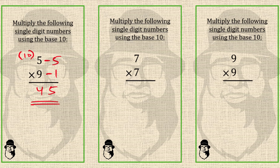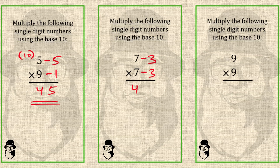Here 7 is 3 far from 10, so we write minus 3. Again minus 3. Now cross subtract: 7 minus 3 is 4. And for the right part, we multiply these two deficiencies: 3 times 3 is 9. So 7 times 7 is 49.